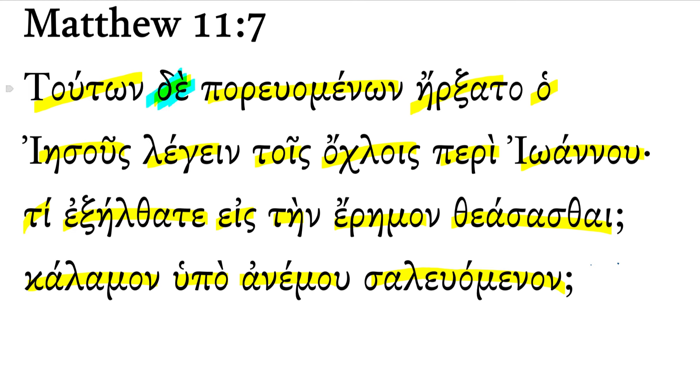And we read now, as they were going - that is, as John's disciples were going back to him - this is a genitive absolute construction. I'll remind you, a genitive absolute construction has a genitive participle and a genitive noun or pronoun, in this case the demonstrative pronoun.